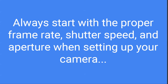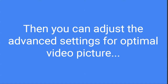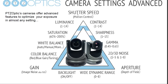For shutter speed, aperture, and gain — these are the pillars of camera settings. That's where we want to start before we get into anything more complicated, because that's what we're building upon. Always start with the proper frame rate, shutter speed, and aperture when setting up your camera. Then we can adjust the advanced settings for optimal video picture.